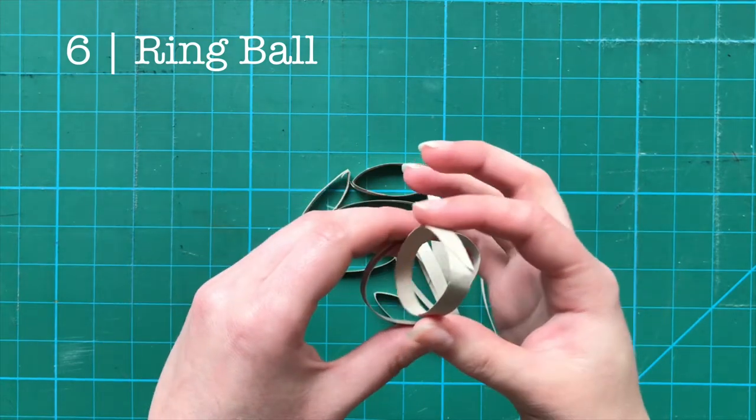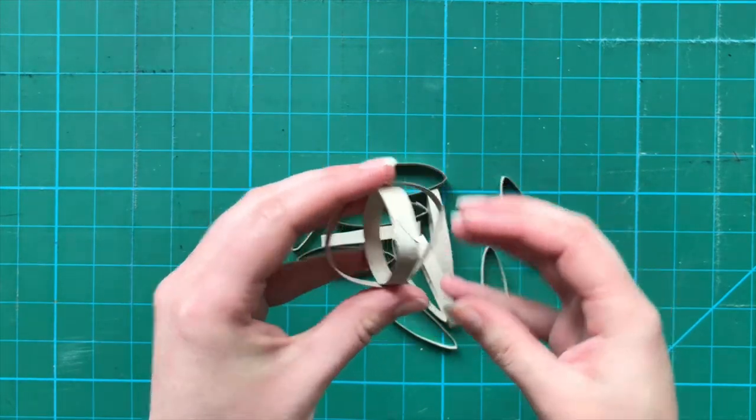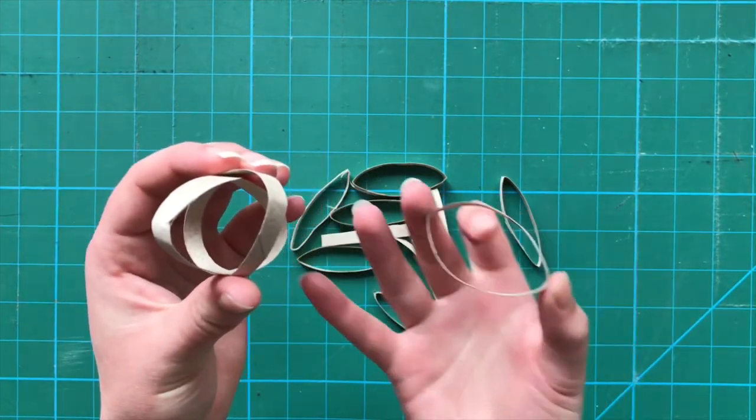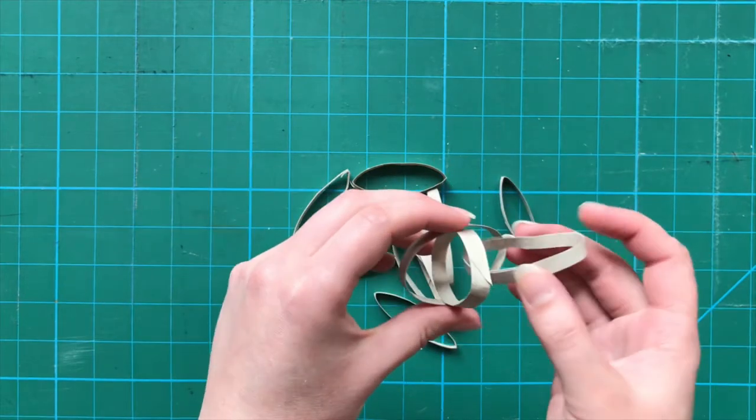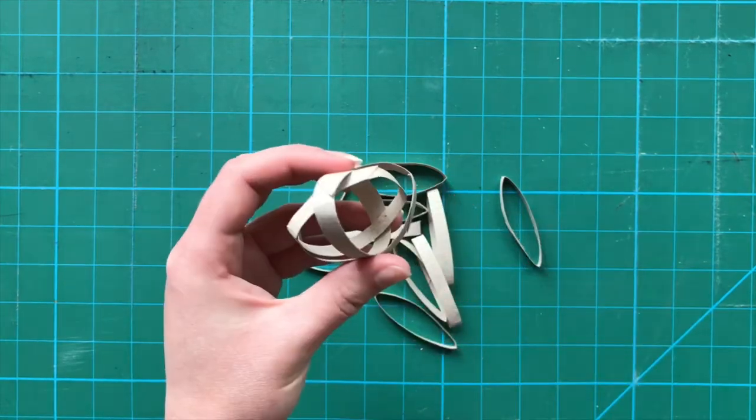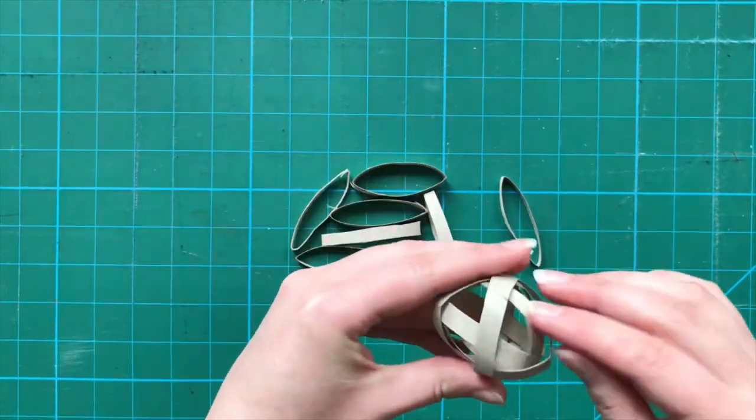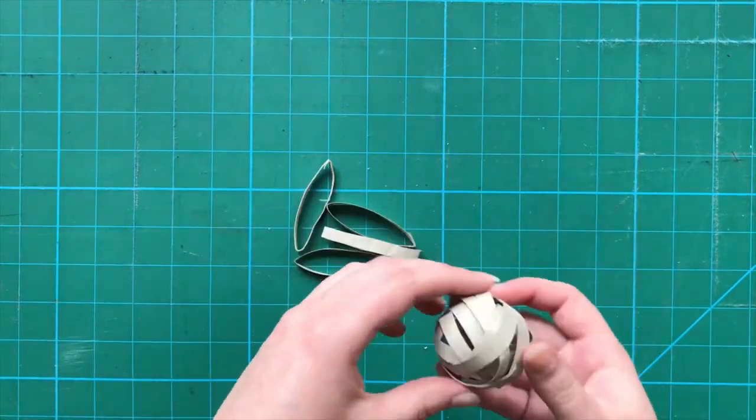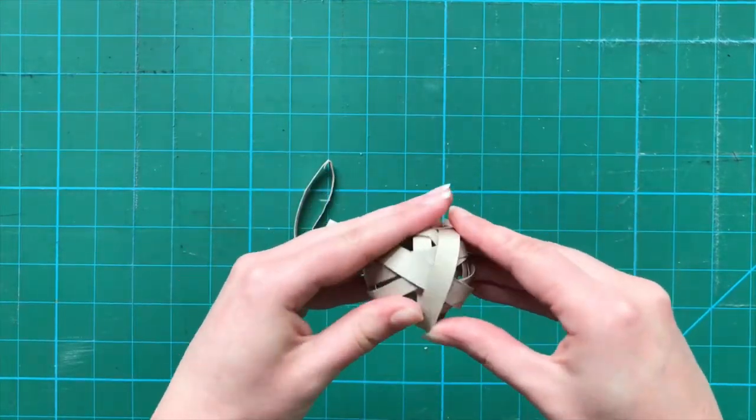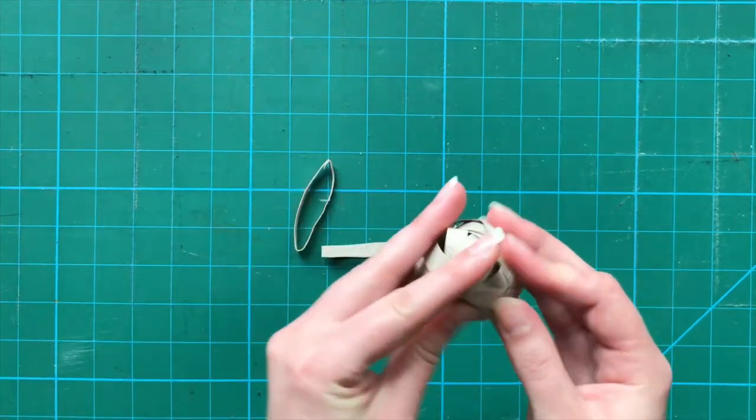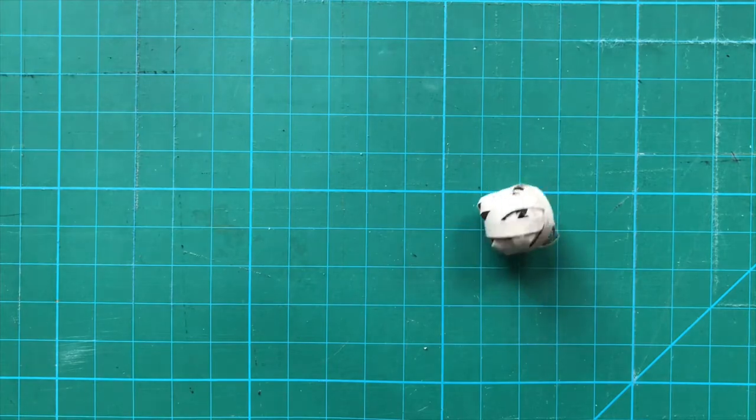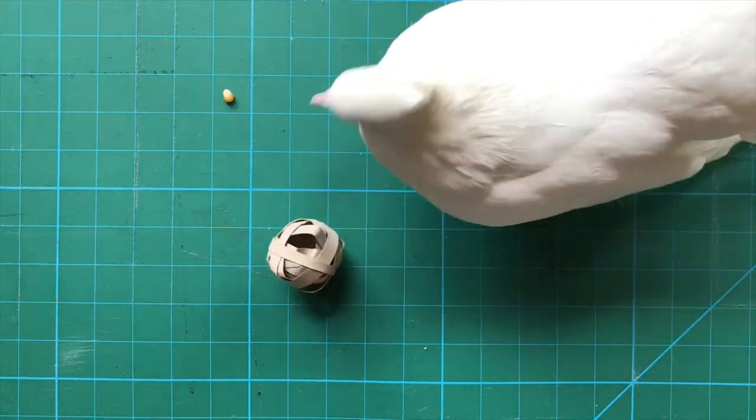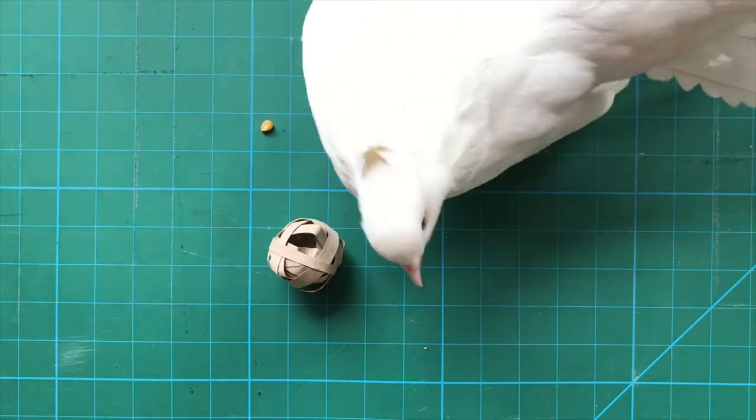Number six, ring ball. You can also use these rings to make a ball. Just start by placing one inside the other, changing the angle as you go. You end up with a hollow ball that can be played with as is or you can put some treats inside it and let the birds work out how to get them. Apparently that piece of corn does not pass the Tallulah inspection.